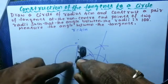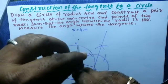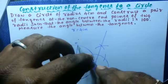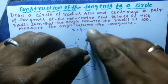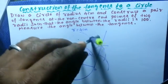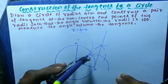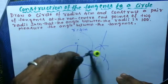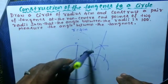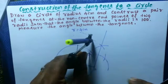Similarly, do the tangent construction for the radius OB. Take more than half of that radius and draw a semicircular arc. Where it touches the radius, mark the point and cut the semicircular arc from here.